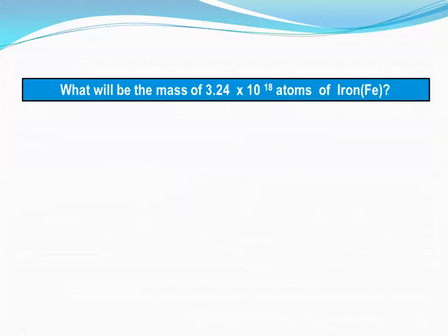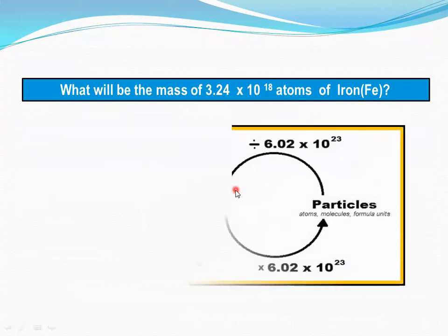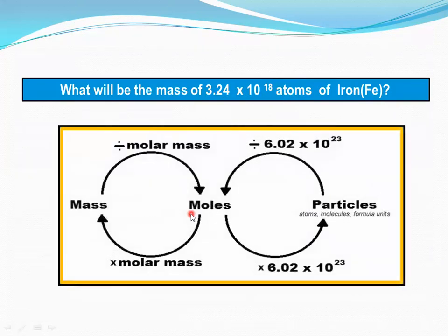Now, particle to mass calculation. Example: what will be the mass of 3.2 × 10¹⁸ atoms of iron? We have the number of particles. First, we convert it into number of moles by dividing by the Avogadro constant. When we obtain the number of moles, we convert it into mass in grams by multiplying by the molar mass.